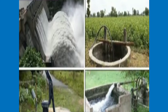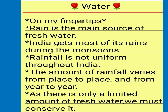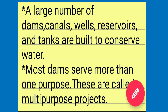Thus we have learned about the water resources of India. Rain is the main source of fresh water. India gets most of its rain during the monsoons. Rainfall is not uniform throughout India; the amount varies from place to place and from year to year. As there is only a limited amount of fresh water, we must conserve it. A large number of dams, canals, wells, and tanks are built to conserve water. Most dams serve more than one purpose and are therefore called multipurpose projects.